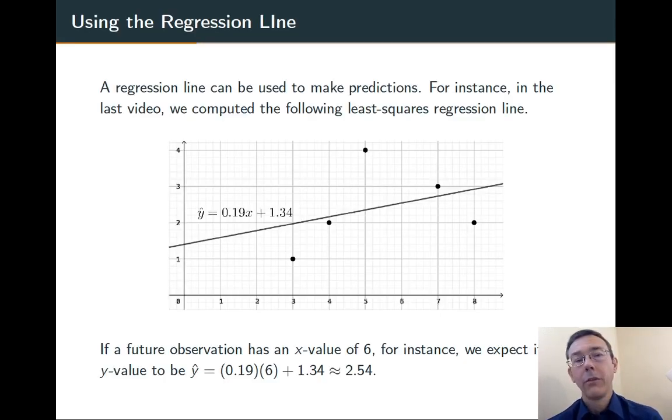This example might look familiar if you've seen my last video. It's a small data set, we've got five values here, and I've drawn a line of best fit, y hat equals 0.19x plus 1.34. Now suppose we get another input value, another value x equals 6. We can use this line to predict what the y value might be just by plugging into that regression equation.